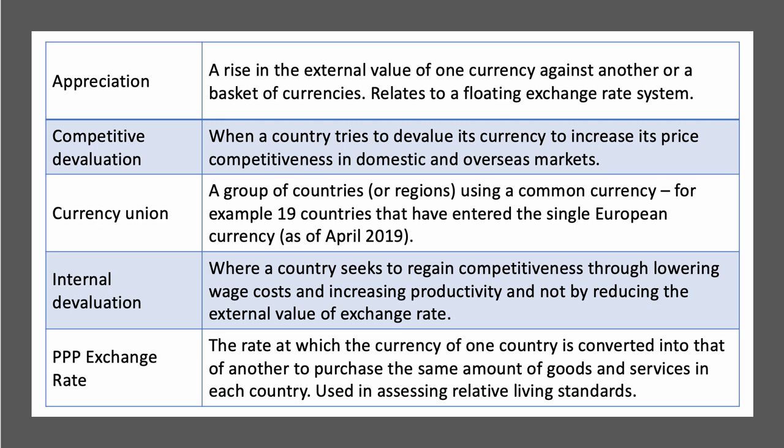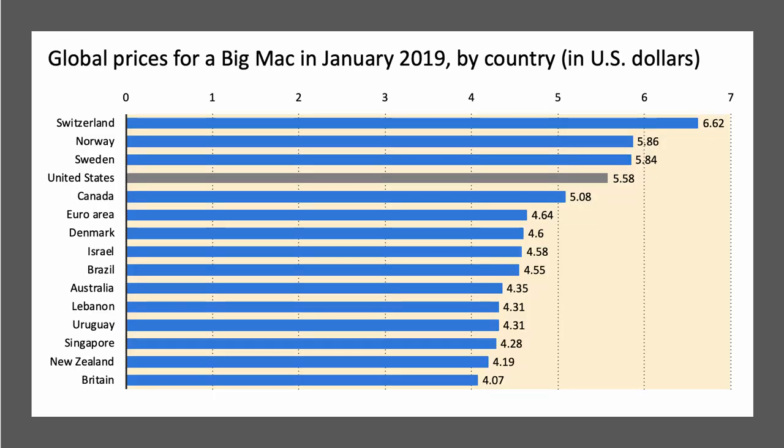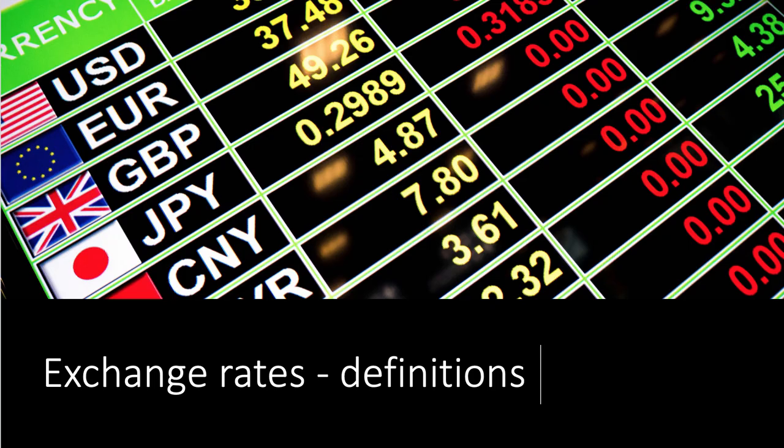One measure of whether a country's exchange rate is at PPP levels — though imperfect — is the Big Mac index published by The Economist. This chart shows global prices for a Big Mac, regarded as an indicator for the purchasing power of an economy. The average price for a Big Mac in Switzerland in January 2019 was over $6.50, compared to just over $4 in the UK. You can then convert the UK dollar exchange rate to see whether a Big Mac is cheaper in the UK than in, say, Chicago or New York. The Big Mac index is one measure of purchasing power parity.